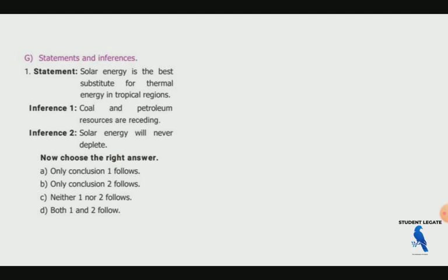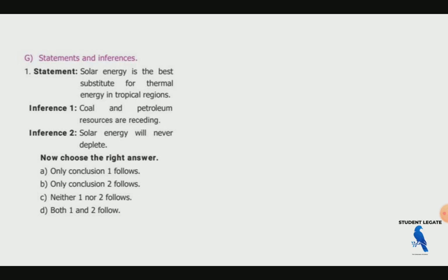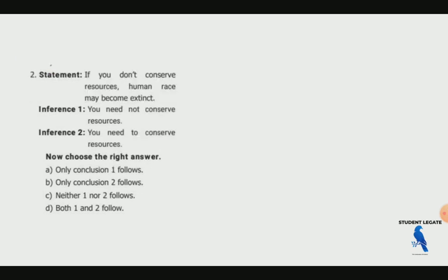Now for statement and inference questions. Statement: Solar energy is the best substitute for thermal energy in tropical regions. In tropical regions, solar energy can replace thermal energy, so solar energy should be used. Second inference: If you don't conserve resources, the human race may become extinct — so it is important to conserve resources.